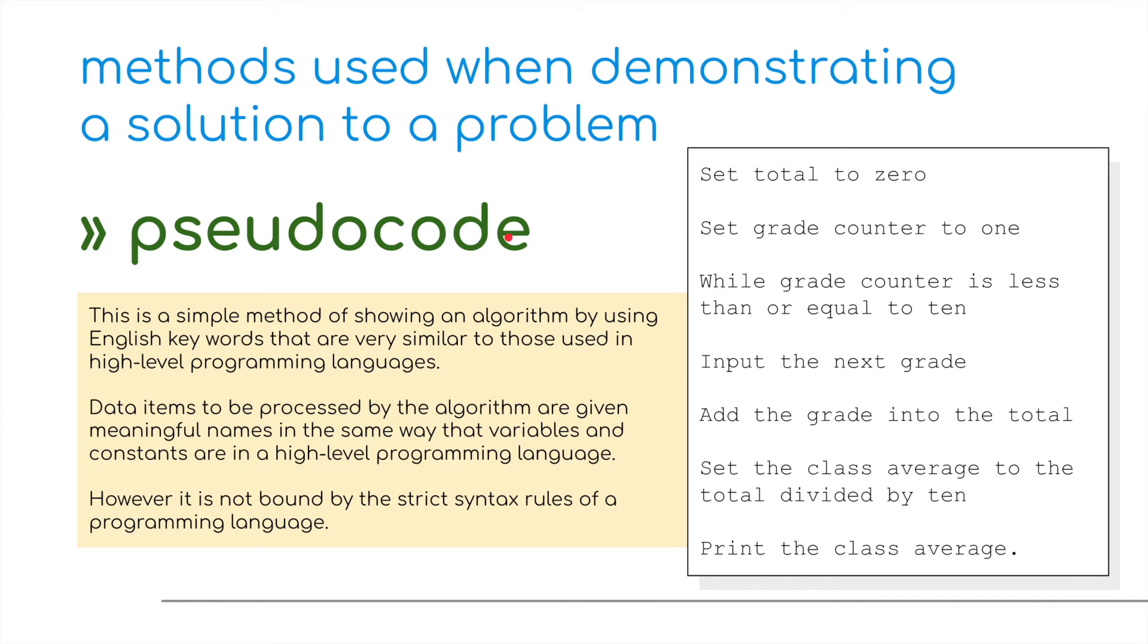So just to recap on pseudocode, this is a simple method of showing an algorithm by using English keywords that are very similar to those used in high level programming languages. Data items to be processed by the algorithm are given meaningful names in the same way that variables and constants in a high level language are used, however it is not bound by a strict syntax rule of a programming language.